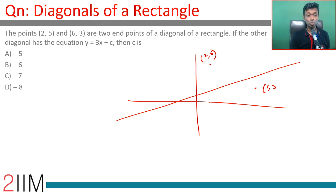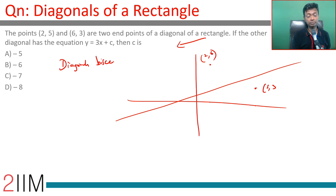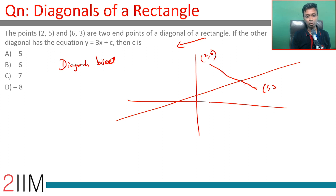The key to this is that we know this is a rectangle. In a rectangle, the diagonals bisect each other. So that tells us that this diagonal should pass through the midpoint of the other diagonal.